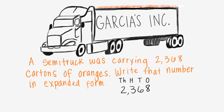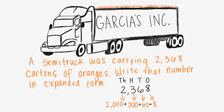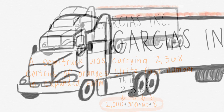Since the two is in the thousands place, that means it's two thousands, which makes two thousand. Since the three is in the hundreds place, that's three hundreds, which makes 300. The six is six tens, which makes 60, and the eight is just eight ones. Let's place the plus signs between each of those numbers, and we know that 2,000 plus 300 plus 60 plus 8 equals 2,368 in expanded form.